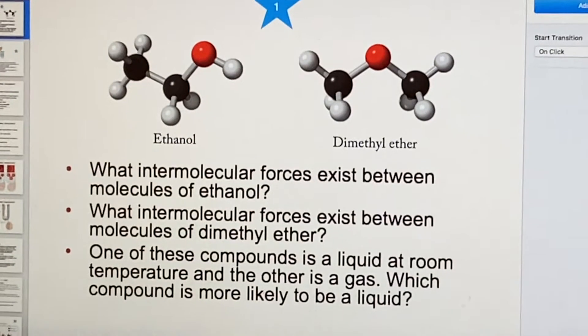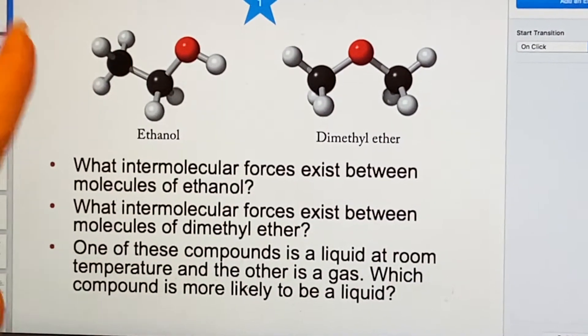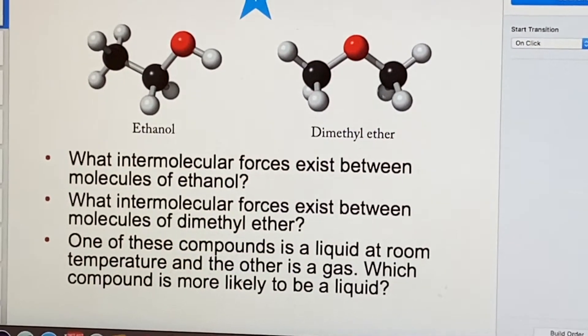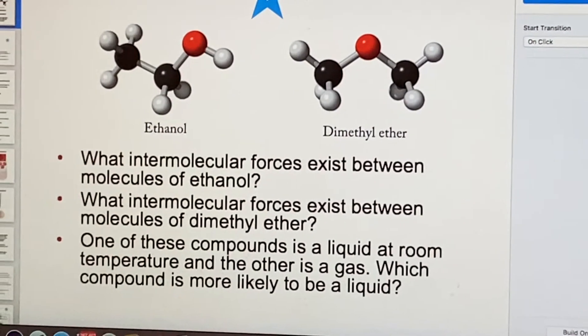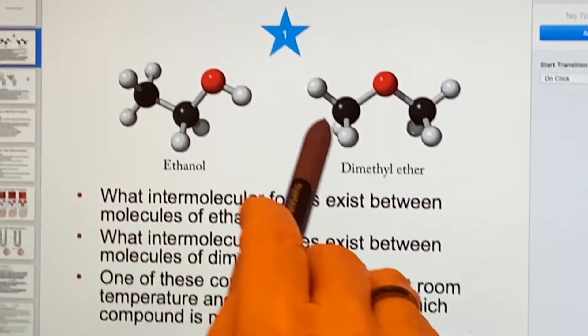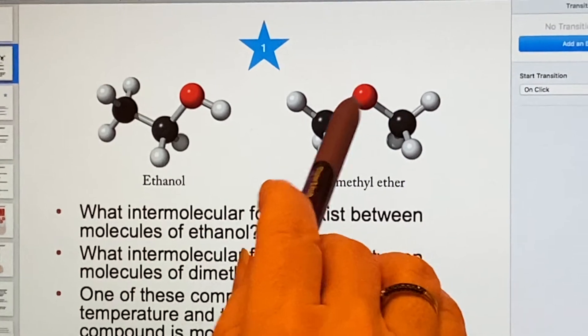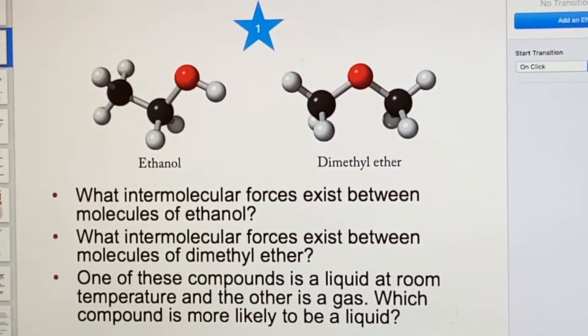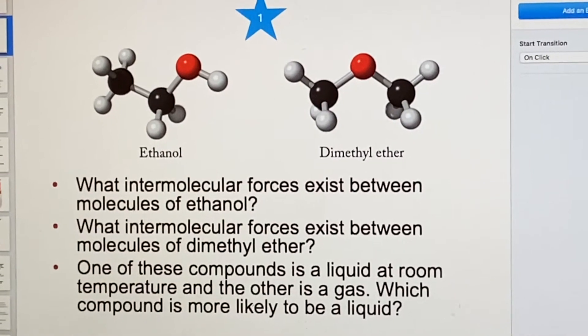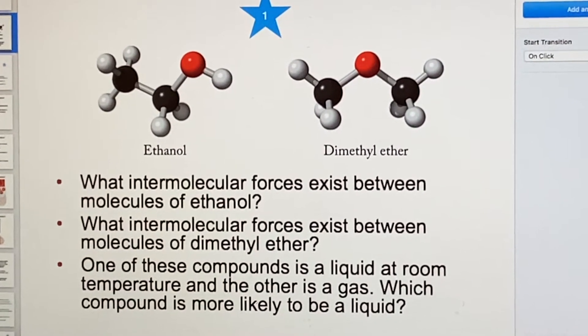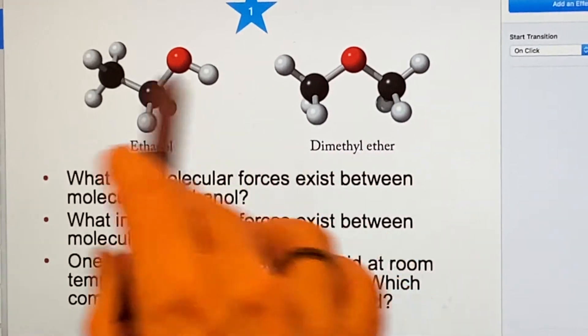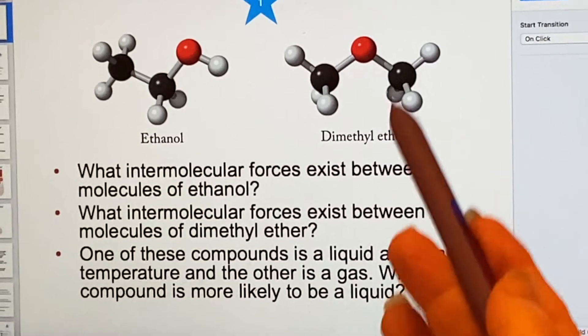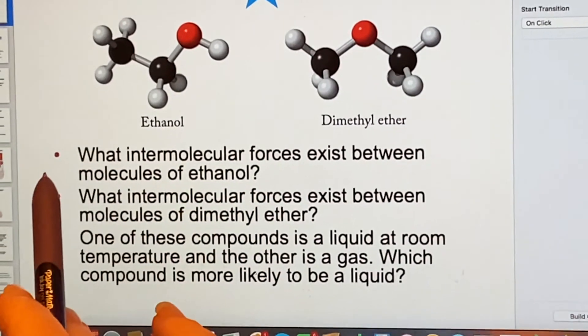We have two different molecules up here. We have ethanol and dimethyl ether, and it turns out that if we look at them, we find that there are two carbons in each, one oxygen in each, and six hydrogens in each. So the total number of atoms and types of them is exactly the same. It's just how they are arranged. Okay, that's great. What are we going to do with that? Well, first of all, we ask the question,